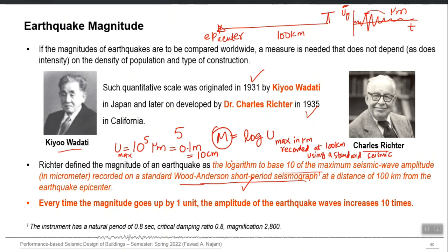The definition of magnitude is set such that it is logarithmic — it is log of peak displacement. So magnitude 6 is not just 1 unit higher than magnitude 5, it is 10 times higher. Magnitude 7 is 10 times higher in ground motion than magnitude 6. Every time the magnitude goes up by 1 unit, the amplitude of the earthquake waves increases 10 times. There is not a small difference between magnitude 7 and 7.2 — 7.2 is far more destructive than 7.